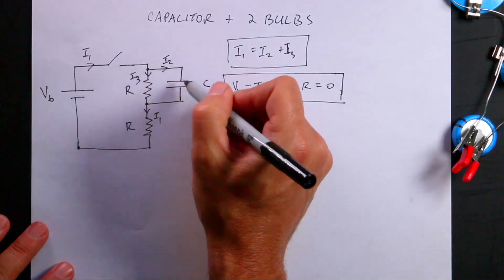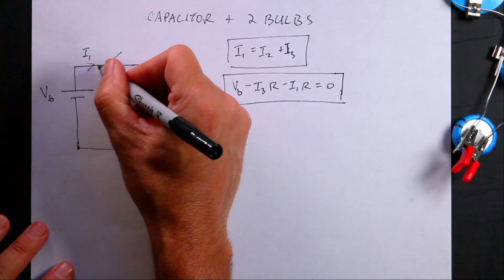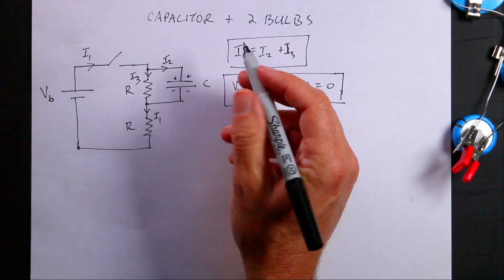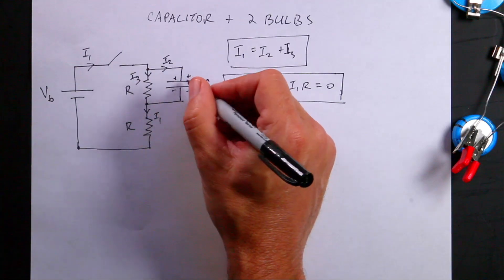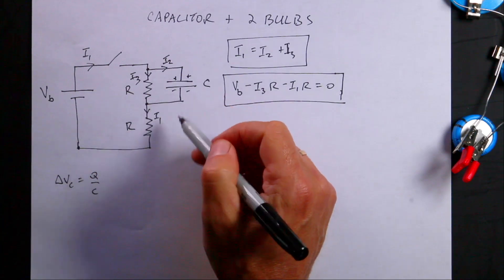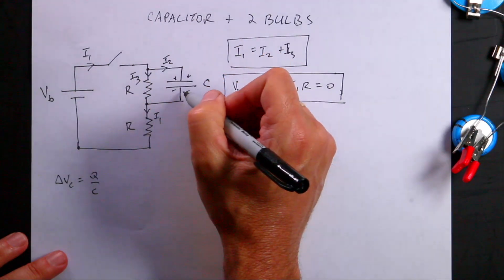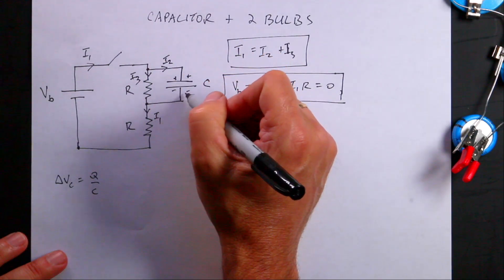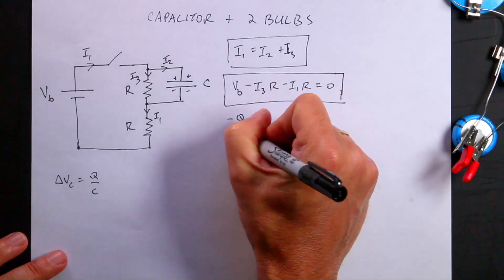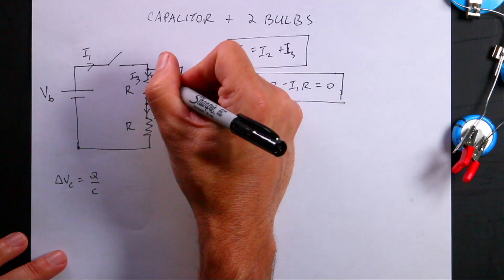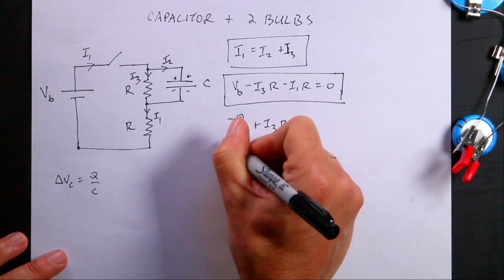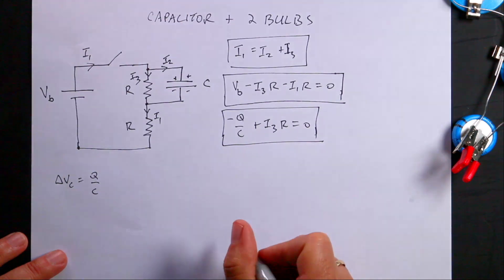For the final loop involving the capacitor: if current comes out charging one plate, that side is positive and the other negative, with charge Q building up. The voltage across the capacitor is ΔVC = Q/C — the more charge, the greater the voltage. Going around this loop, I get negative Q/C, and then I'm going opposite to the current through the resistor, so it's plus I3·R, and that equals zero.